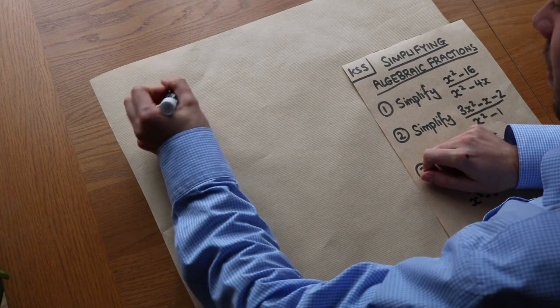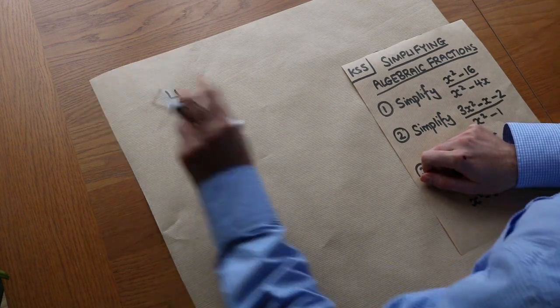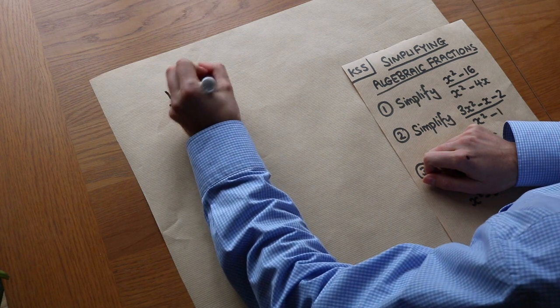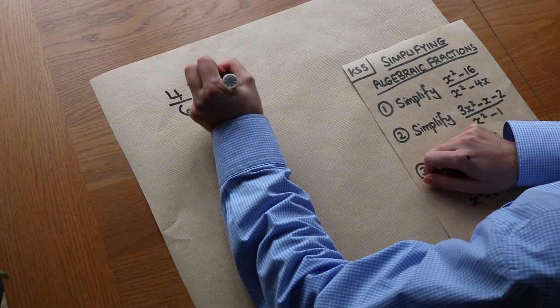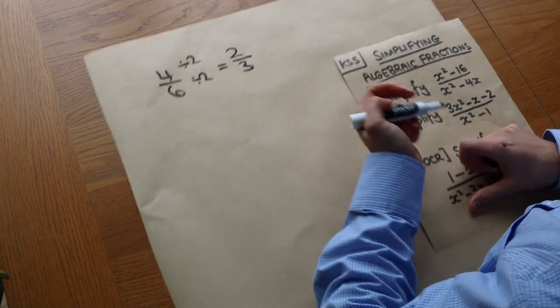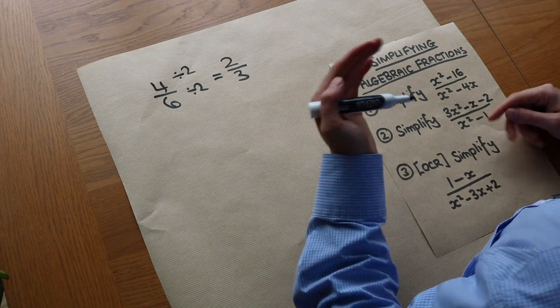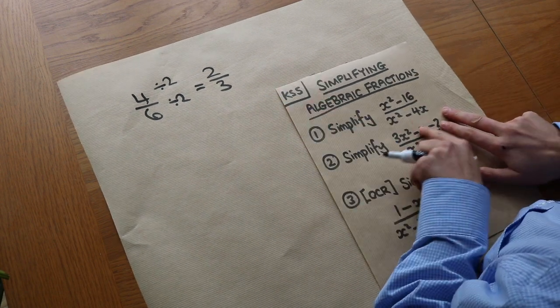You're already familiar with the idea of simplifying fractions. If I had say 4 over 6, then we know we can divide top and bottom of that fraction by 2 to get 2 over 3. That might seem obvious, but it's important to realize that you can only simplify fractions by dividing. You cannot simplify fractions by subtracting.